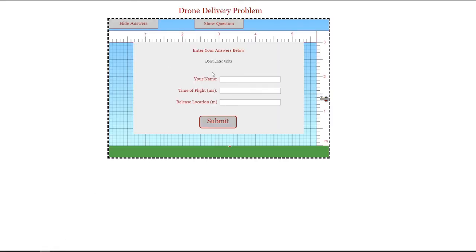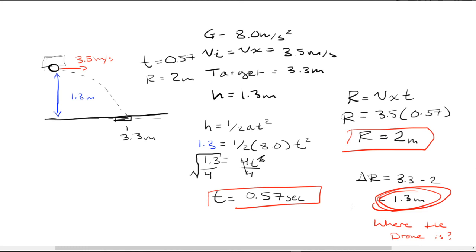We're going to go ahead and enter our answers. Enter your name—everybody knows my name at this point if you've seen all three of my videos. The time of the flight is in milliseconds. I always forget to do this. So when we're looking at the time here, we want to convert it into milliseconds, which I always forget to do, but that's super easy. All you do is multiply this by a thousand and you should get 570 milliseconds, and that's the same as 0.57 seconds.